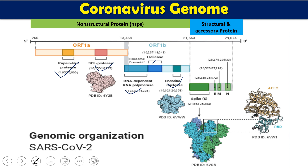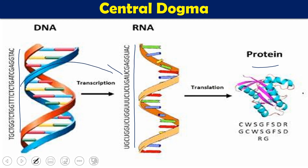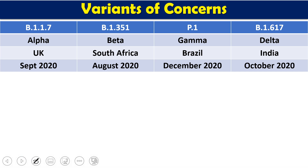Whenever there is a mutation — a genetic change in the DNA sequence — it changes the RNA sequence, and depending on the RNA sequence the organism produces a specific protein. If even a single nucleotide changes in the DNA, the RNA sequence changes and simultaneously the protein changes. This is what we call a mutation, and whenever there is a mutation, the proteins are going to be changed.